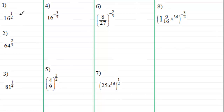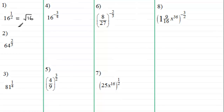Number 1: 16 to the power half. Remember that anything to the power half means the square root, so what we've got here is the square root of 16, and the square root of 16 is equal to 4.